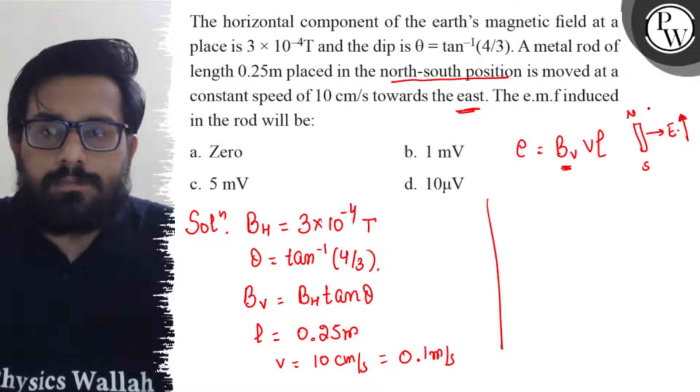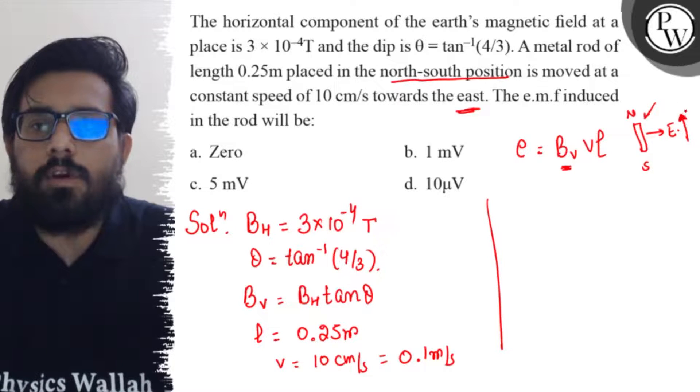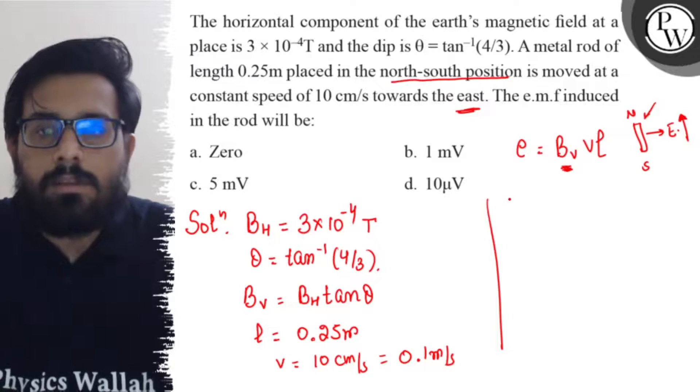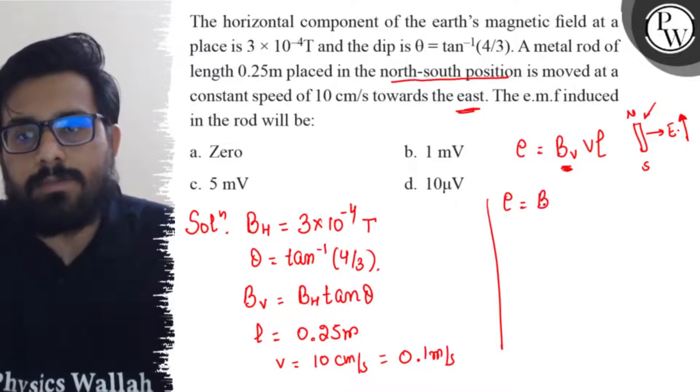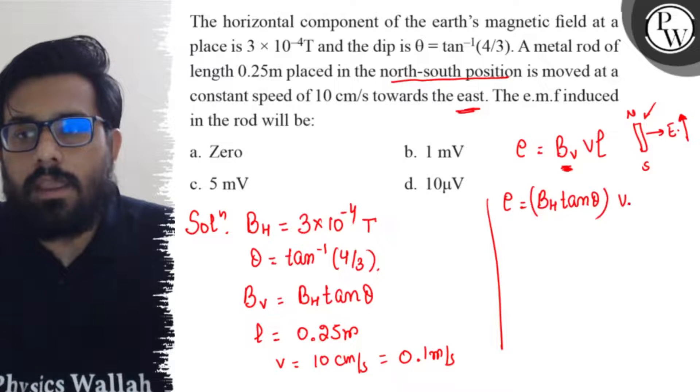So here, the change in magnetic field is just because of the vertical component, not because of the horizontal component. That is why we consider BV over here. So solving it further, this can be written as BH tan theta into V into L.